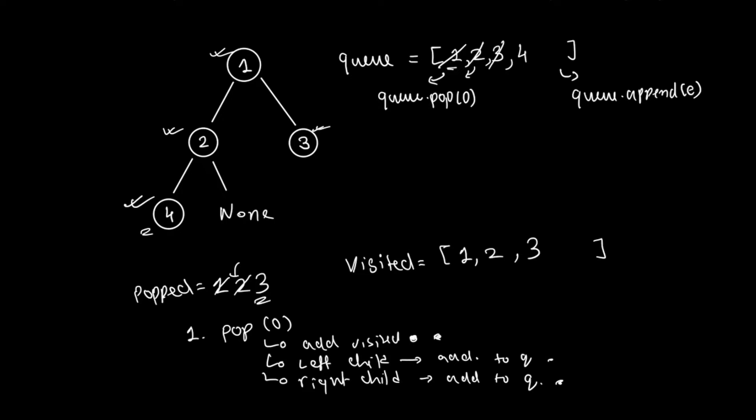Again I repeat the commands — I pop from the queue and the popped element is four. I add four to visited. Is there a left child? No. Is there a right child? No.